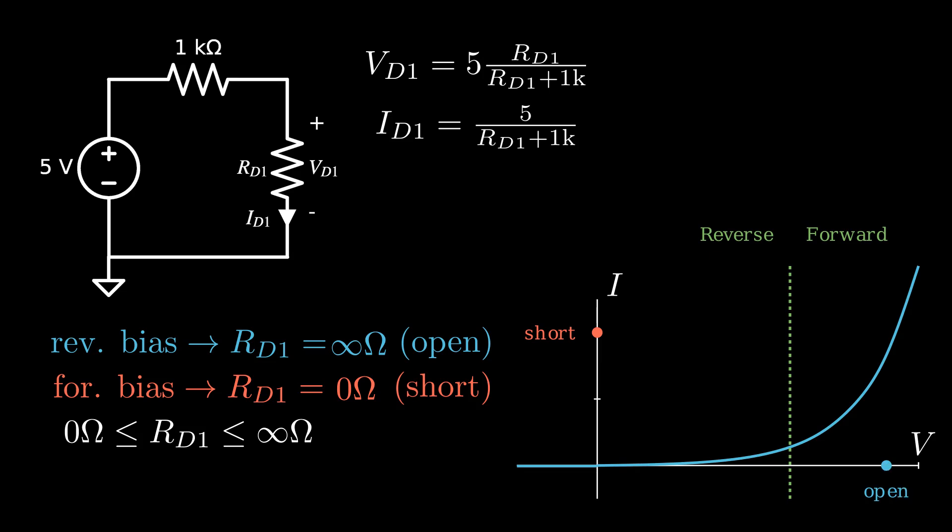We find the other extreme point on the horizontal axis. Again, notice two things here. First, there is no current through the open, so the point has to lie on the horizontal axis. Second, the point is located at a finite value equivalent to the voltage across the diode, as if it wasn't open.